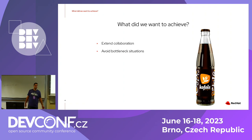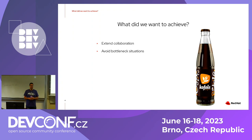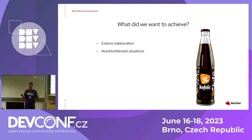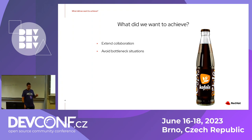We also wanted to avoid bottleneck situations. We have six engineers across four projects, so naturally one engineer knows one project deeply, two know another, and so on. When one engineer comes to a meeting and says, 'Hey, I'm going to be a father, I'll be on leave for four months,' who does their work? No one else knows that project. If an issue comes up, we'd have to learn everything really quickly — and believe me, that doesn't go well.